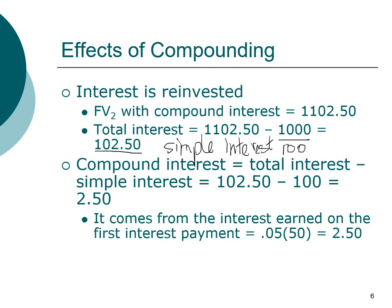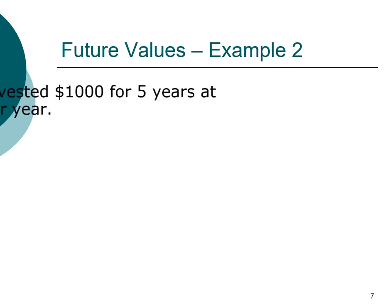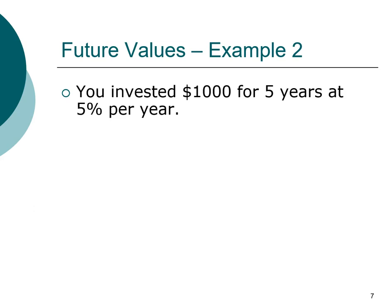Now let's look at another future value example. Say you invest one thousand dollars for five years at five percent per year. How much would you have at the end of year five, assuming annual compounding? We are computing future value. I'd suggest you pause the video at this point and try to work out the answer, then check your solution with me in just a minute.